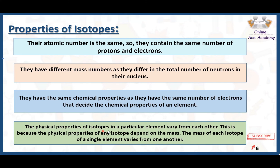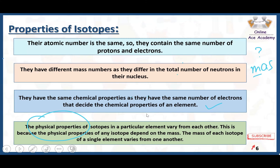The physical properties of isotopes of a particular element vary from each other because physical properties depend on mass. Since the mass number of each isotope differs, properties such as melting point, boiling point, density, and freezing point will all be different and will vary among the isotopes.